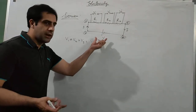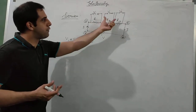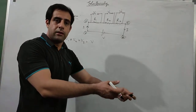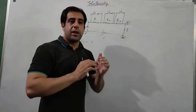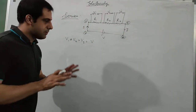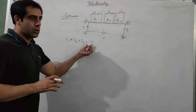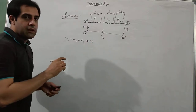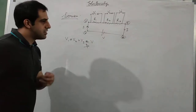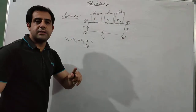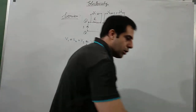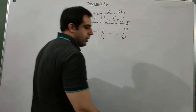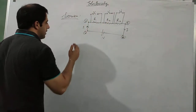Obviously the sum cannot be greater than V, because the supply is V — the potential difference across different devices can never exceed the potential difference of the source. It can at most be equal to the source. In your syllabus we assume there are no losses in the circuit, so V1 plus V2 plus V3 equals V.